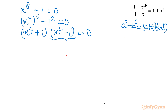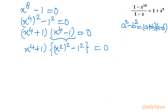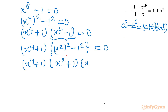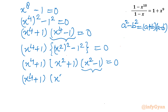Continuing the factorization: (x^4 + 1) is unchanged. Applying difference of squares to x^4 - 1 gives (x² + 1)(x² - 1). Applying it once more to x² - 1 gives (x + 1)(x - 1). So the full factorization is (x^4 + 1)(x² + 1)(x + 1)(x - 1) = 0.